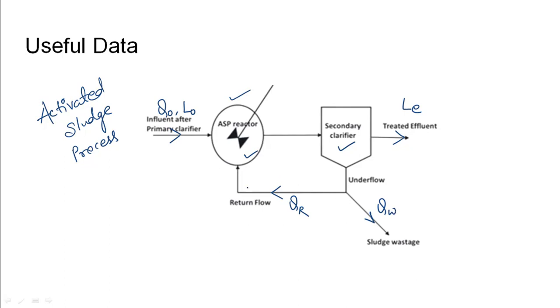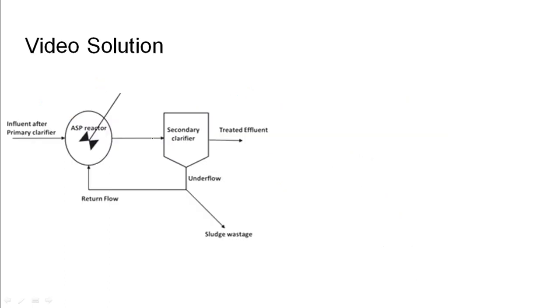Once the returned biomass is added into the aeration basin, the net flow out of the aeration basin becomes Q0 plus Qr. Given the diagram in the question, we are given the values of Q0 and L0. Q0 is given as